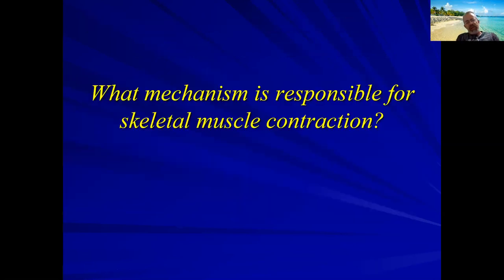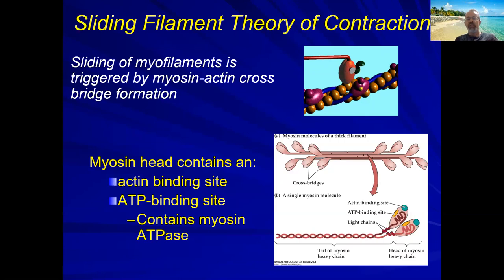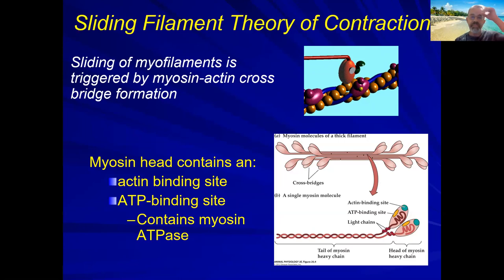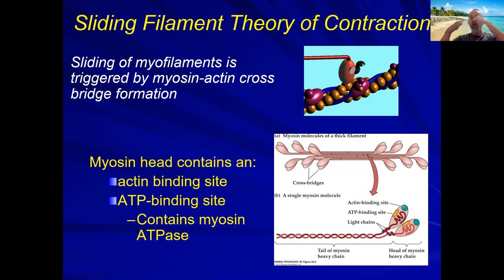We know that nerve stimulates the muscle to contract, but what is the mechanism? Acetylcholine is released and depolarizes the membrane — but what happens from that point until the muscle actually shortens? The whole process is known as the sliding filament theory — really no longer a theory, it's the sliding filament law. When a muscle is stimulated to contract, actin and myosin cross-bridge and interact with each other, ultimately pulling actin towards the center. The sarcomere shortens because the filaments are sliding past each other.